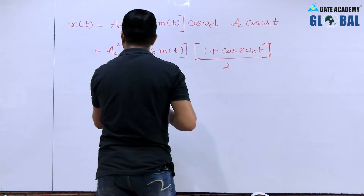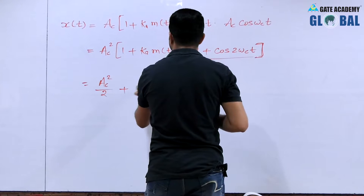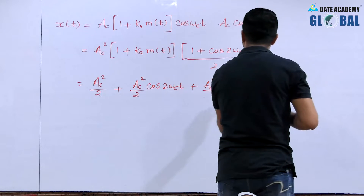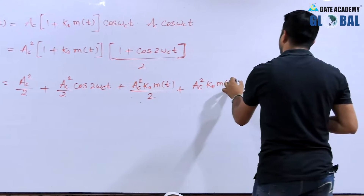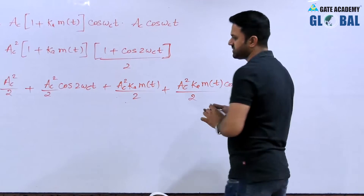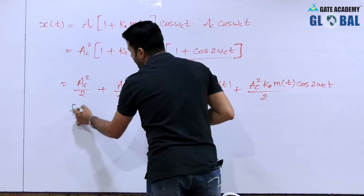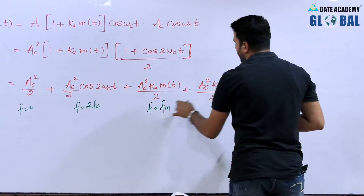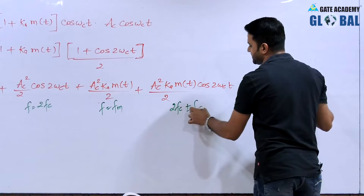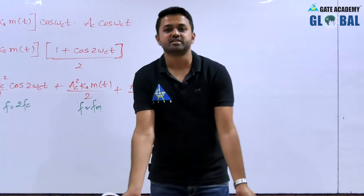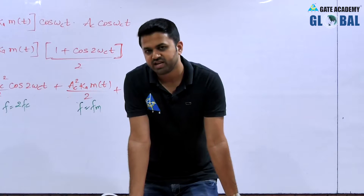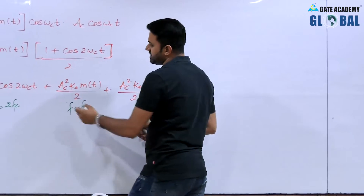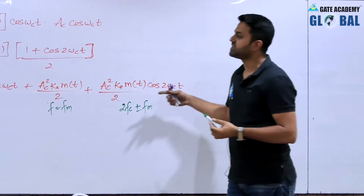Expanding, we get terms: Ac²/2 (constant, frequency f = 0), Ac²/2·cos(2ωc·t) (frequency f = 2fc), Ac²·k·m(t)/2 (message signal, frequency fm), and a double sideband term centered at 2fc ± fm. We are interested only in the message signal at frequency fm. The other terms — the DC term, the 2fc term, and the DSB term — are suppressed by the low pass filter.